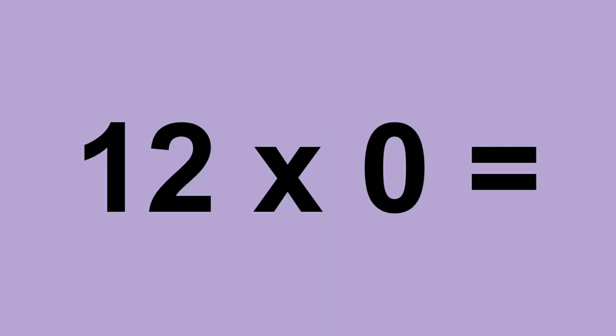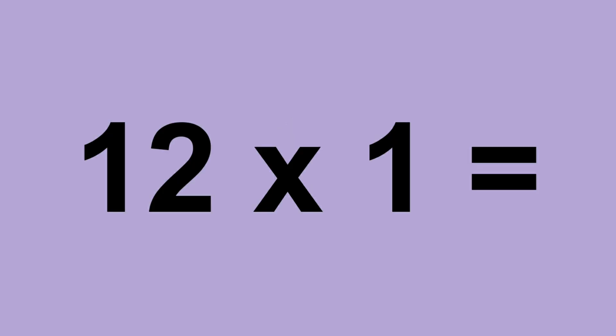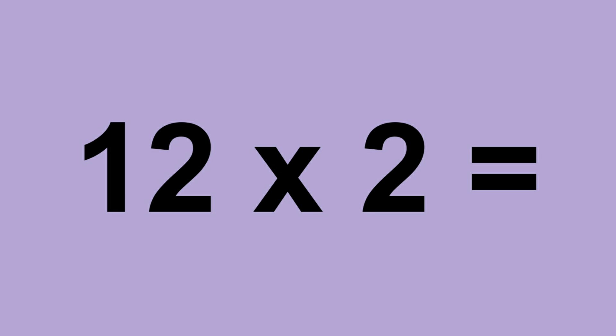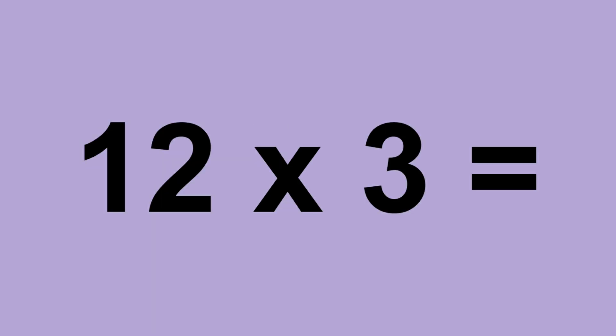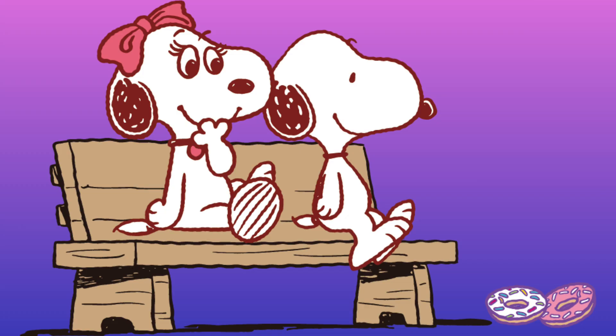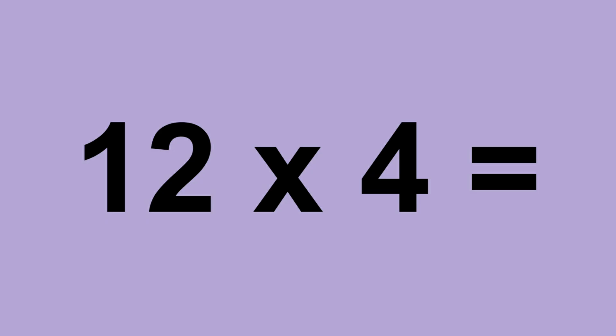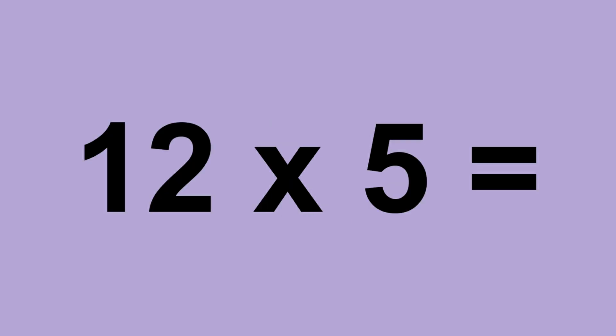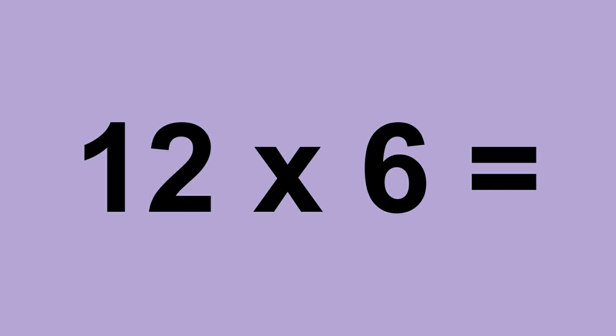12 times 0 equals 0. 12 times 1 equals 12. 12 times 2 equals 24. 12 times 3 equals 36. 12 times 4 equals 48. 12 times 5 equals 60. 12 times 6 equals 72.